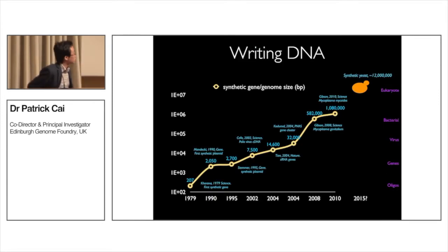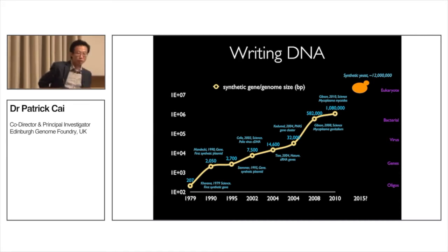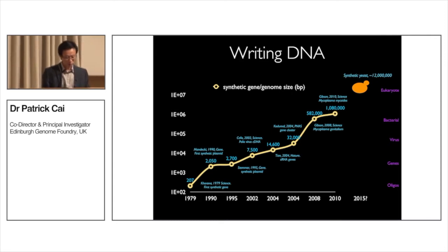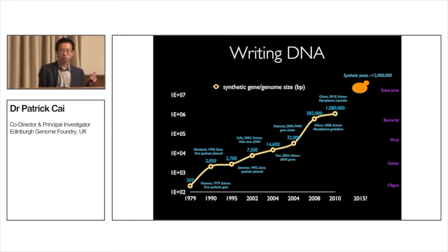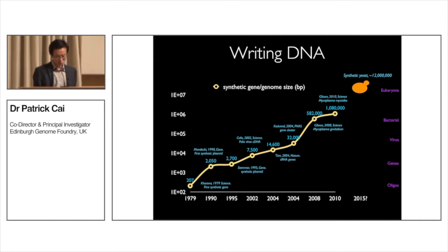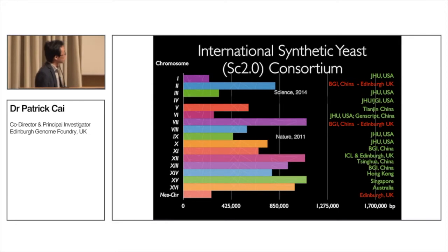This is the progress since 1979, all the way up to a synthetic bacterial genome being re-synthesized by Craig Venter. My group, along with many others around the world, tries to synthesize the first synthetic eukaryote, which is synthetic yeast. It's a million base pairs — not just a lot more DNA, but it's the first eukaryote, so it's going to require a lot more design.